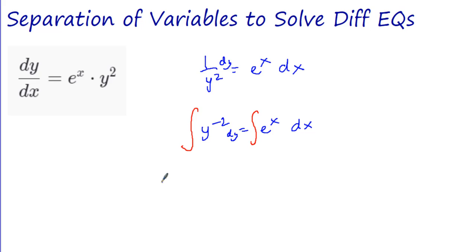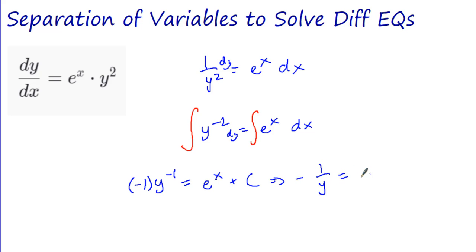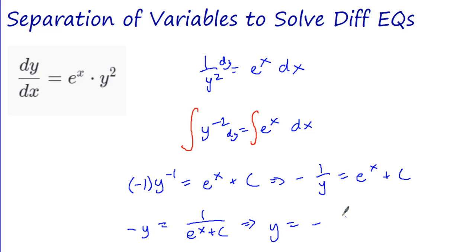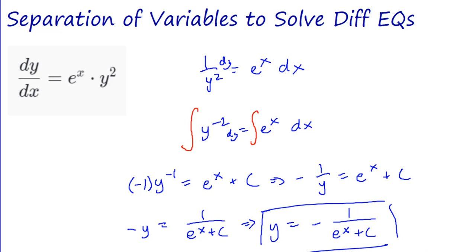What's the integral of y^(-2)? That would be y^(-1) times (1/(-1)). What's the integral of e^x? It's e^x + C. So we have negative 1/y equals e^x + C. Getting y by itself, taking the reciprocal: negative y equals 1/(e^x + C). Multiplying by negative: y equals negative 1/(e^x + C), plus some constant. I don't know what that constant is. That is my solution to my differential equation.